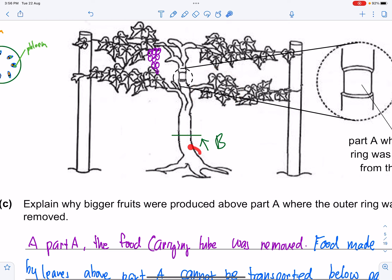So the roots will not get any food at all. So because of that, eventually the roots will die. When the roots die, it cannot absorb water. So without any water, all the leaves on top will not be able to photosynthesize and make food.